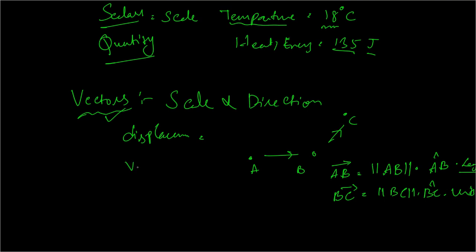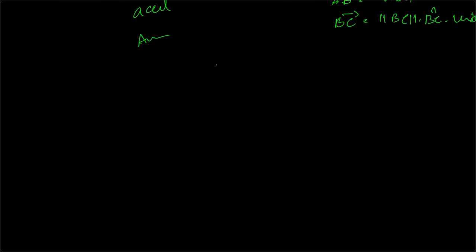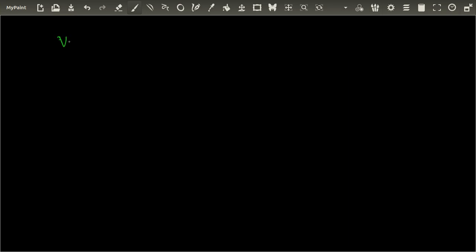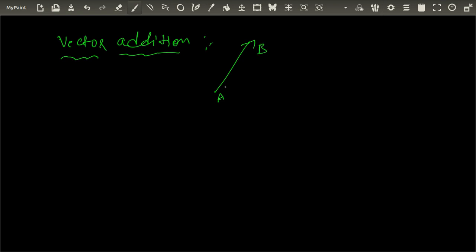There are many parameters that fall under vectors: displacement and its derivatives — velocity, acceleration, angular velocity, and so on. Now we're going to learn more about vectors and their properties. The first thing to learn is vector addition, which is interesting because it also leads us to the concept of vector components and other properties.